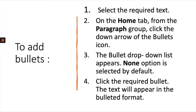The first step to add bullets or numbering is to select the text. Then go to the Home tab. From the Paragraph group, click on the Bullets drop-down arrow. By default, None is the option given. Select the bullet you need to insert, click it, and the text will appear in the bulleted format.